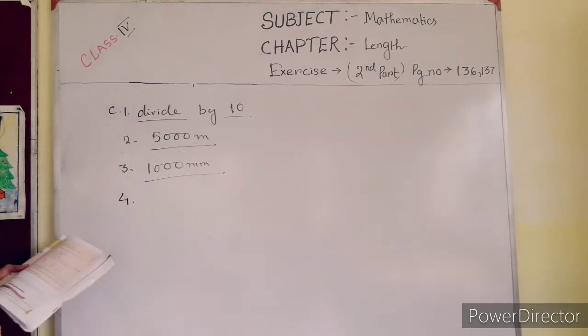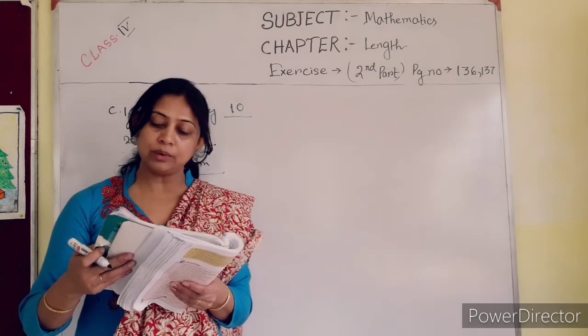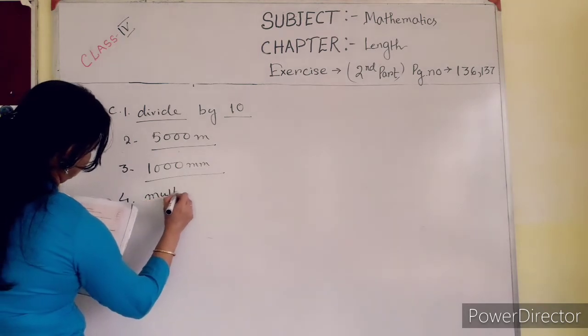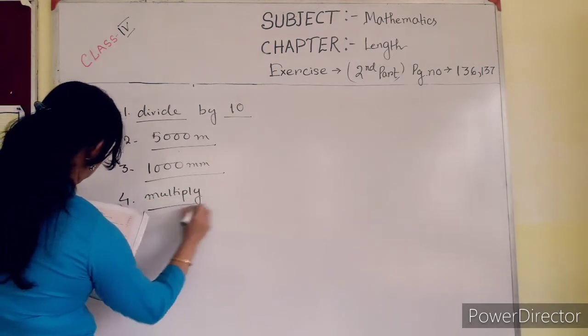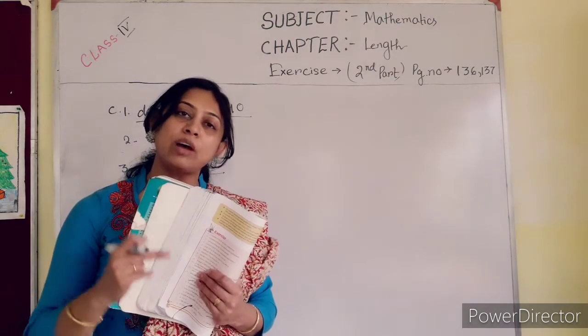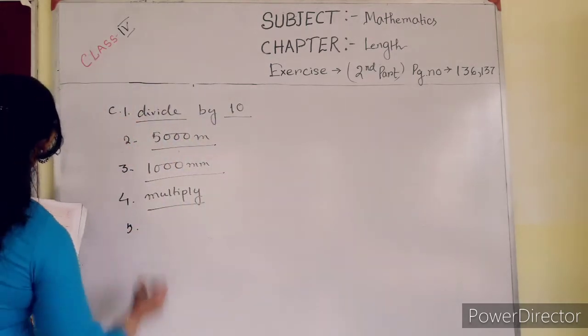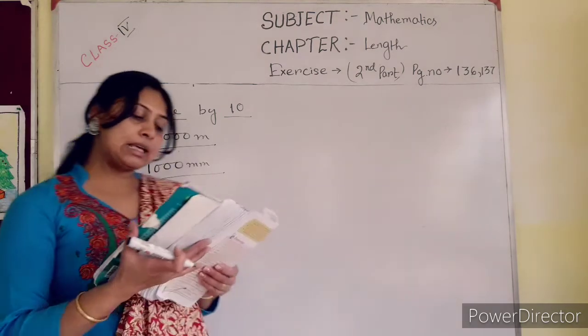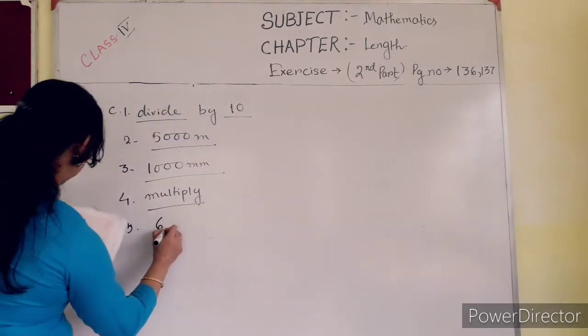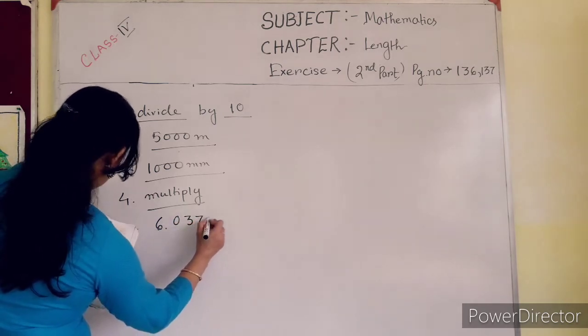Number 4, to convert bigger units of length to smaller units of length, we multiply. 5 kilometer equal 50,000 or 500 kilometer, so you have to multiply. Now number 5, 6 kilometer 37 meter can be written using decimal as 6.037 meter. Clear?